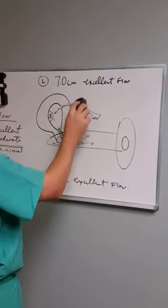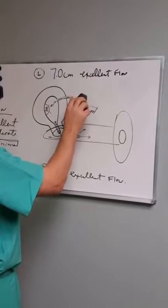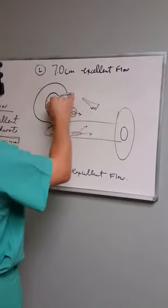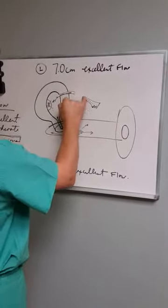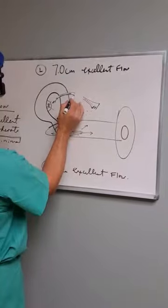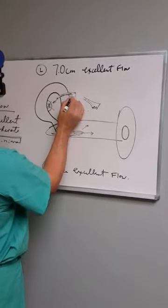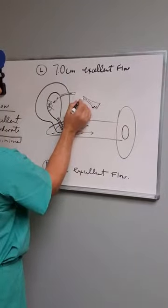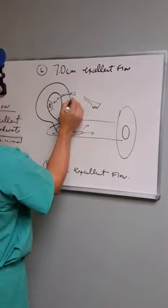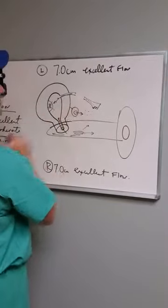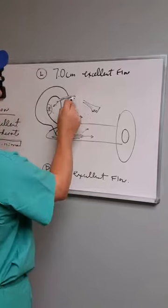When I do a tubal reversal, I go in and I cut out the scar tissue and I take the tube back a little bit just to where I can get really good fresh tissue here so that I know that when I put the tubes back together, we're going to have good tissue lined up with good tissue. Once I've taken the tubes apart like this,